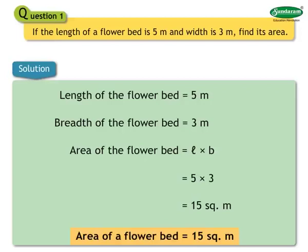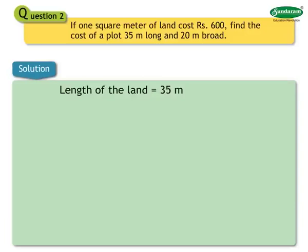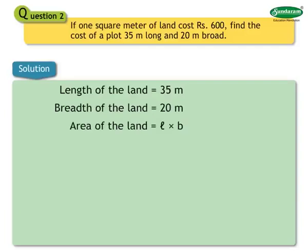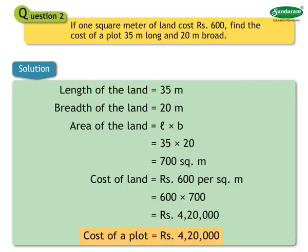Number 2: If 1 square meter of land costs Rs. 600, find the cost of a plot 35 meters long and 20 meters broad. Solution: Length is 35 meters, breadth is 20 meters. Area equals 35 into 20 equals 700 square meters. Cost of the land equals 600 into 700 equals Rs. 4,20,000.